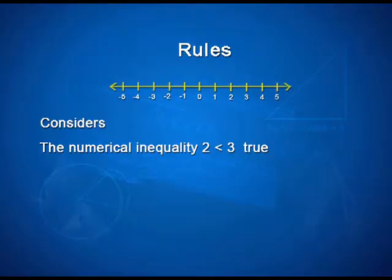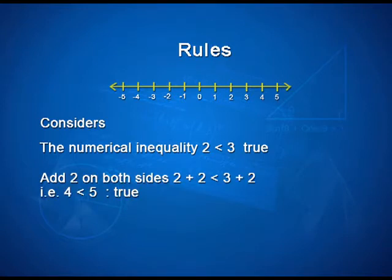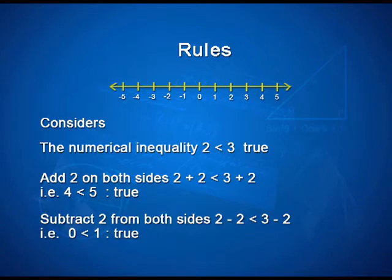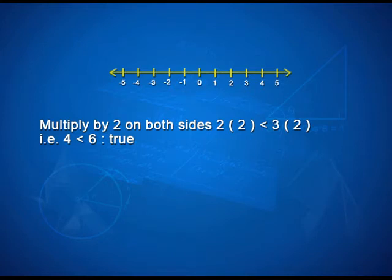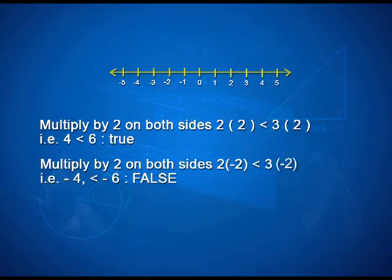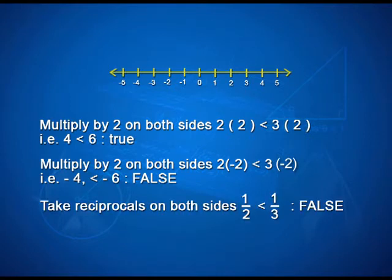Consider the numerical inequality 2 < 3, which is obviously true. Adding 2 on both sides: 2+2 < 3+2, that is 4 < 5 — true. Subtracting 2 from both sides: 2−2 < 3−2, that is 0 < 1 — true. Multiplying by 2: 4 < 6 — true. But multiplying by −2: −4 < −6 is false. Taking reciprocals: 1/2 < 1/3 is again false.